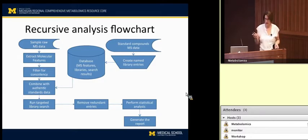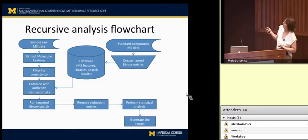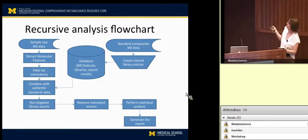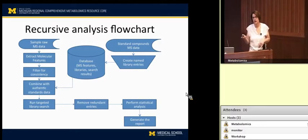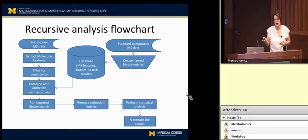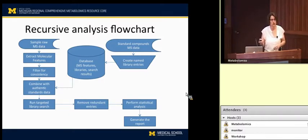To talk about the workflow for how we analyze untargeted data, I want to start with the sample raw MS data. As I showed in my earlier talk, mass spec data comes out as a molecular ion, plus or minus a charge usually, and some of the isotope peaks that come with it.